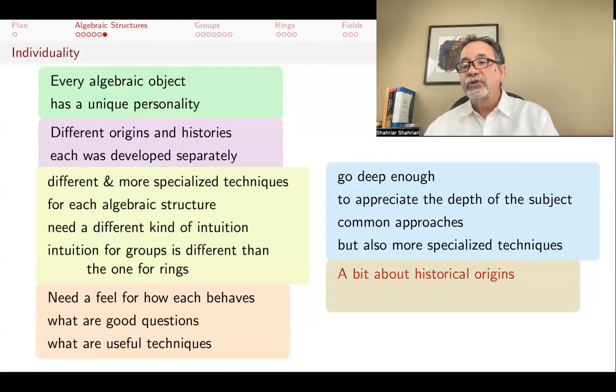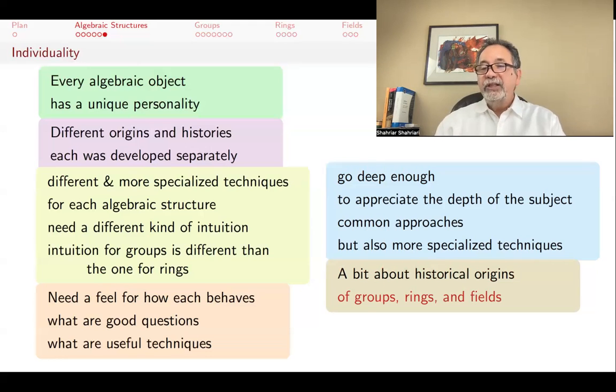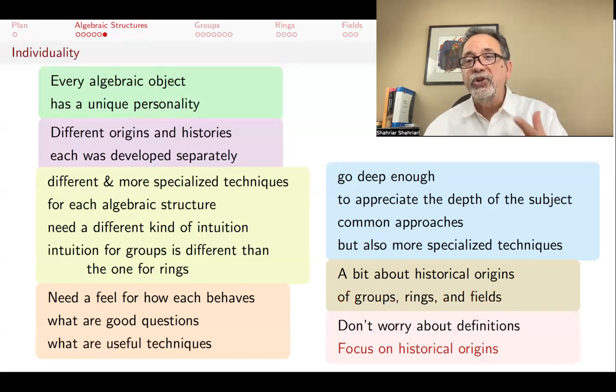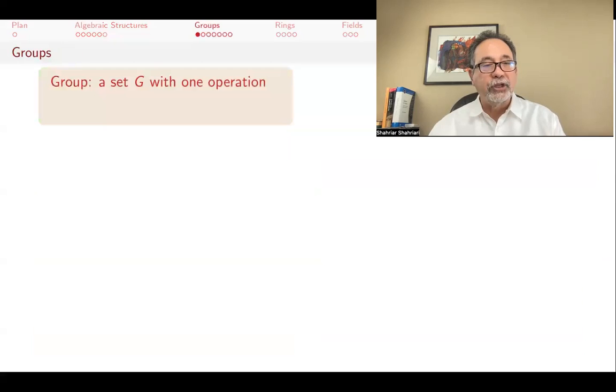I want to now tell you a little bit about the origins of groups, rings, and fields. For what I am going to say, you don't need to really know what these things are. I basically told you what groups, rings, and fields are, but don't worry if that just went right over your head. That's fine. That's the way it's supposed to be at this point. You will learn all of that in future lectures. I want to quickly give you the definitions, but then focus on what questions gave rise to these subjects. Don't worry if the definitions aren't completely transparent at this point. Instead, we are going to focus on the historical origins of these subjects.